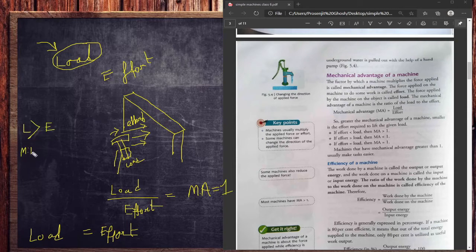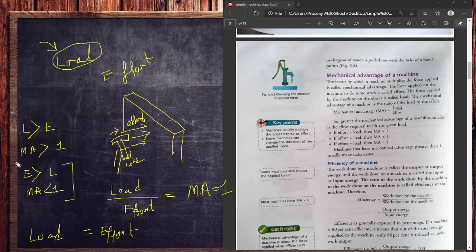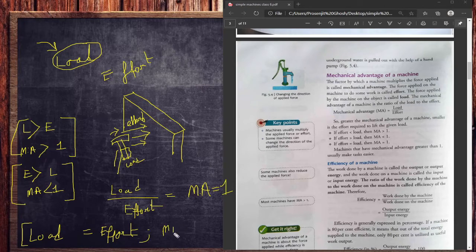And this is the reverse one: if effort is greater than load, then the mechanical advantage will be less than one. So by seeing the mechanical advantage value, you can predict which one is greater. And for this case, I told you mechanical advantage is equal to 1. So please note this all down in your copy because these are very important.